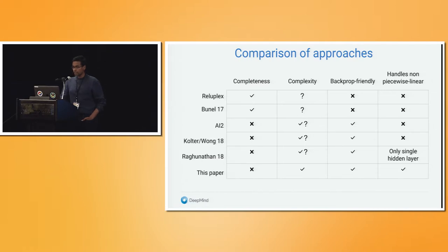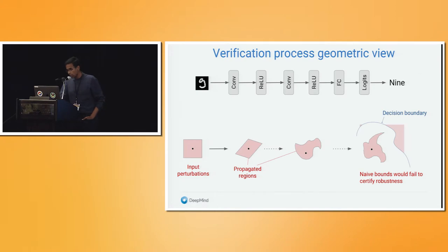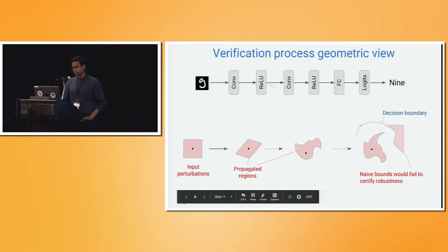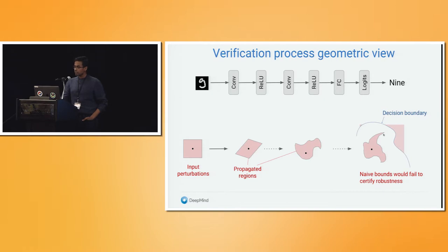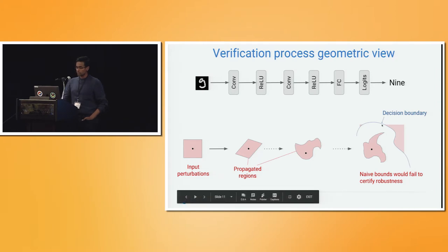Our approach improves upon these with complexity that is linear in the size of the network, is back-prop friendly, fully differentiable, and generalizes to any activation function. Geometrically, a neural network takes an input through a series of layers: linear operations rescale the input region, and nonlinearities distort it, producing a complicated shape at the output. The verification task is to prove that this region does not intersect the decision boundary.